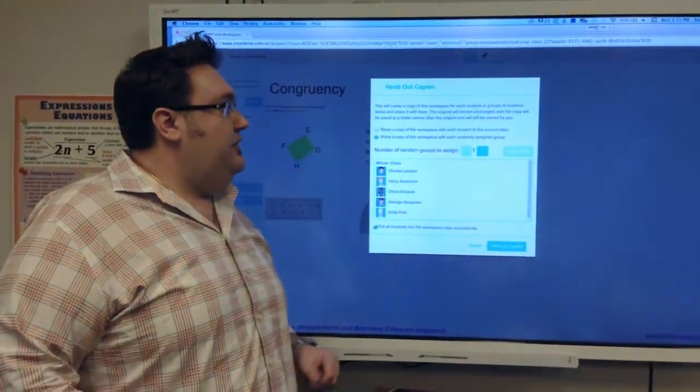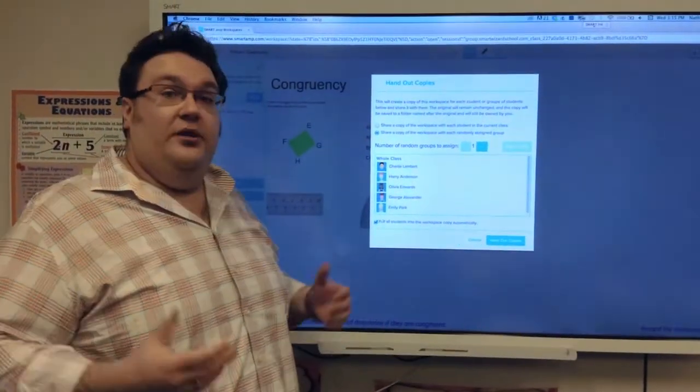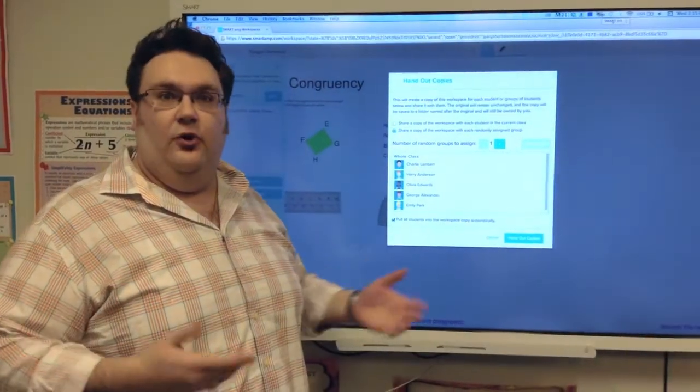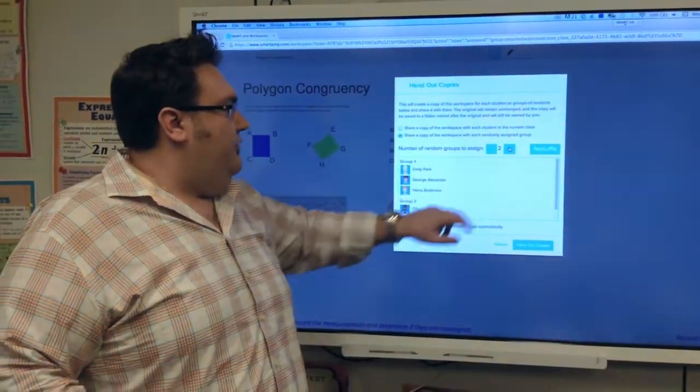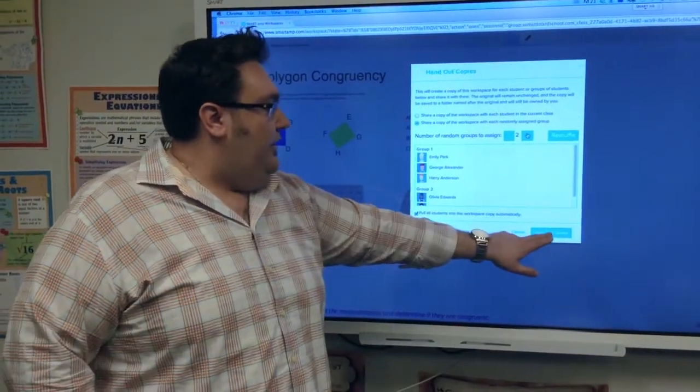I can give each student an individual copy, or I can actually break them out into small groups if we're doing a small group type activity. In this case, I'll break them into groups of two, and I can shuffle those groups around. So I'll hand out copies.